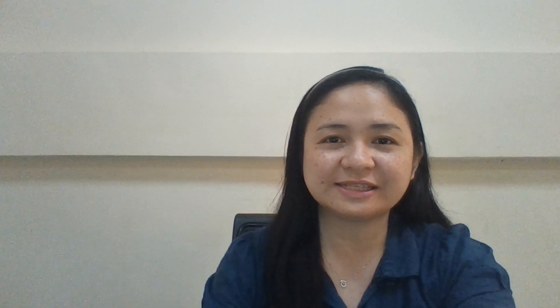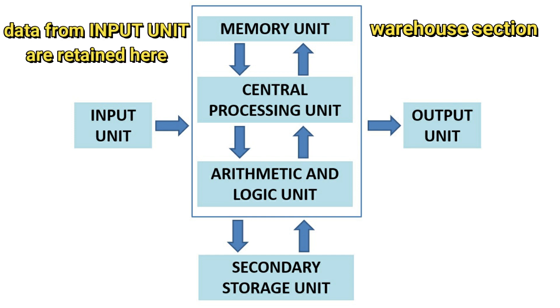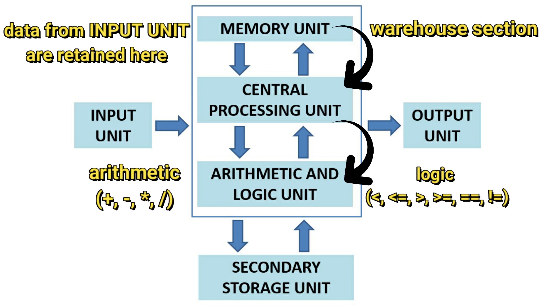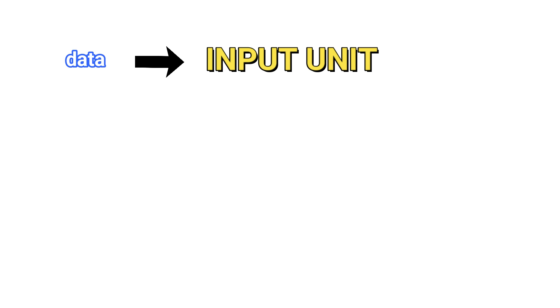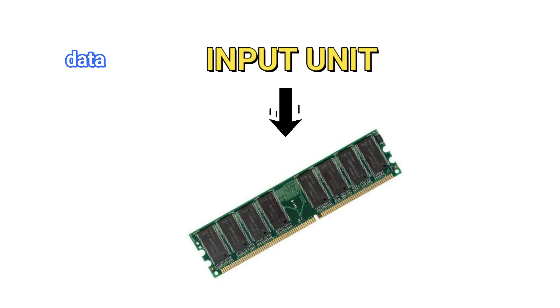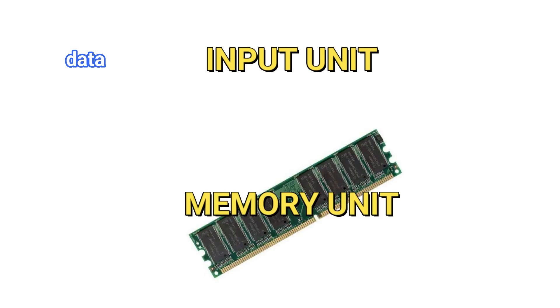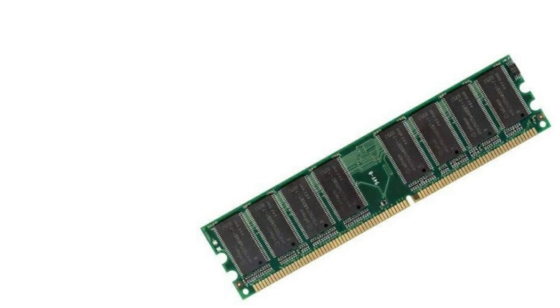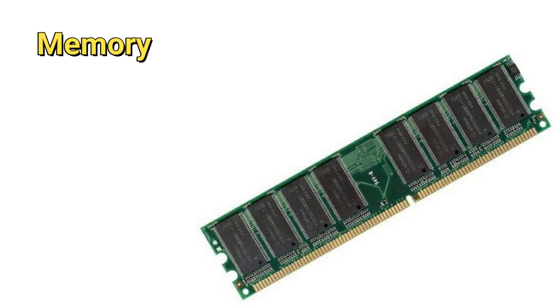Another unit is the memory unit. This rapid-access, relatively low-capacity warehouse section retains data that has been entered through the input unit, making it immediately available for processing when needed. Once the data is captured from the input unit, it will be stored in memory — this is the work of the memory unit. It will be retained until such time that it will be processed later on. The memory unit is often called either memory or primary memory.